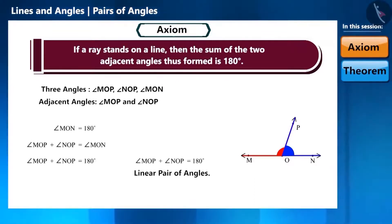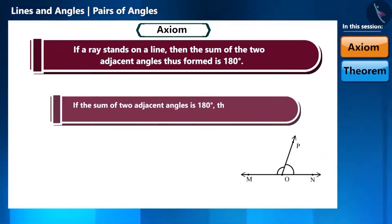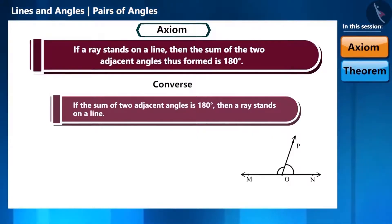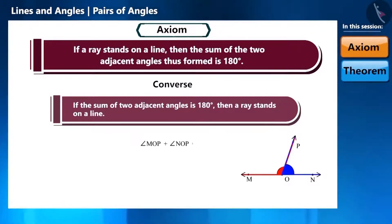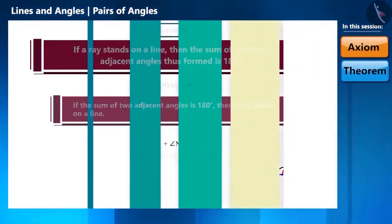The converse is: if the sum of two adjacent angles is 180 degrees, then a ray stands on a line. If angle MOP plus angle NOP equals 180 degrees, then ray OP stands on line MN. Also: if the sum of two adjacent angles is 180 degrees, then the non-common arms of the angles form a line.